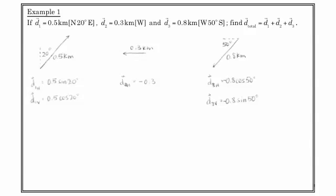Once we have these three vectors resolved into their components, we can now add the horizontals together and we can add the verticals together, so let's do that. The overall horizontal displacement is 0.5 sin 20 minus 0.3 minus 0.8 cos 50. And that gives us negative 0.64.